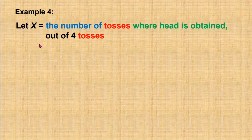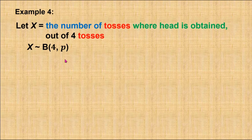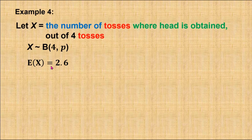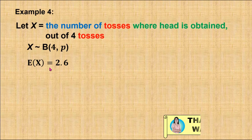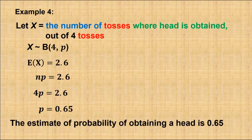Since this question satisfies the conditions of binomial distribution, X follows binomial distribution with n = 4. Since the success criteria is obtaining a head, p is the probability of obtaining a head on each toss, which is the value we are calculating. From the calculation, E(X) = 2.6. Since X follows binomial distribution, E(X) = np, and with n = 4, we get p = 2.6 / 4 = 0.65. Therefore, the estimated probability of obtaining a head is 0.65.